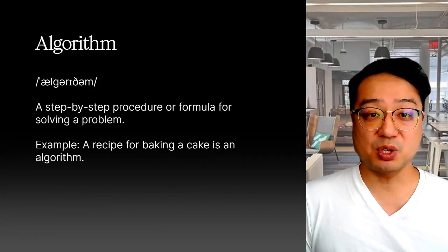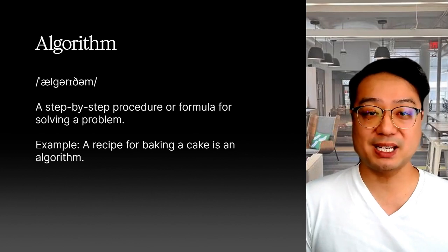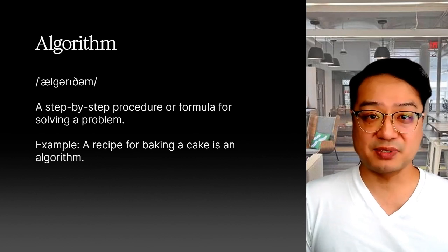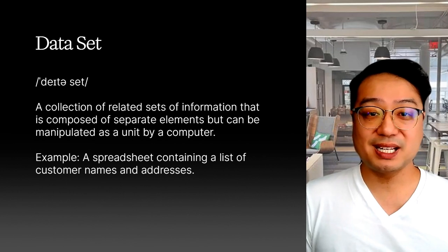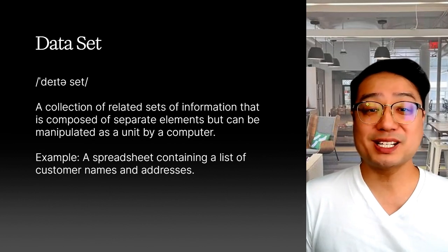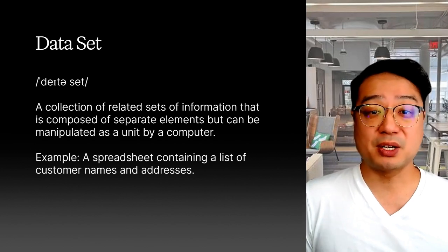So how do these smart machines actually do things? They use algorithms. An algorithm is just a set of instructions that the computer follows to solve a problem — it's like following a recipe to bake a cake. And to learn, AI needs data, and lots of it. That's where datasets come in. A dataset is a collection of information the AI uses to learn and improve. The more data you have, the better the AI can communicate and perform.